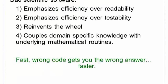Contrast good code with bad code. Bad code is hard for humans to read. It emphasizes small efficiency gains over human readability and testability. Often, it re-implements functions that have already been written and tested by someone else. Also, it can be hard to find the domain-specific algorithm among all of the low-level, secondary routines.